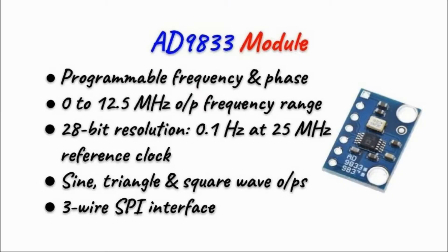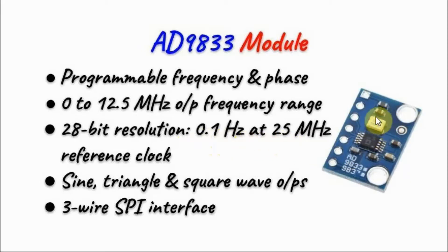The AD9833 is a digital function generator with programmable frequency and phase. Its output frequency range is from 0 to 12.5 MHz, with a resolution of 28 bits and as low as 0.1 Hz frequency increment at a 25 MHz reference clock, which is on-board the module. It can give us an output of sine, triangle, or square wave.